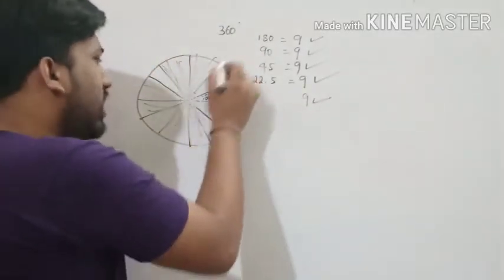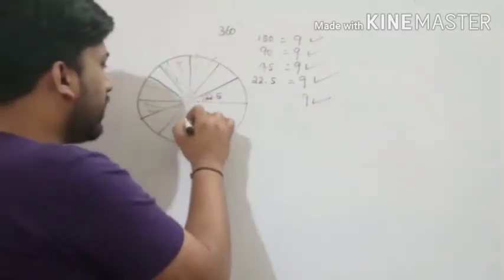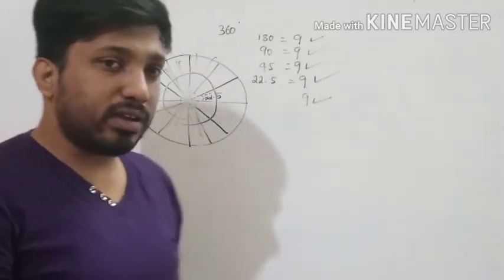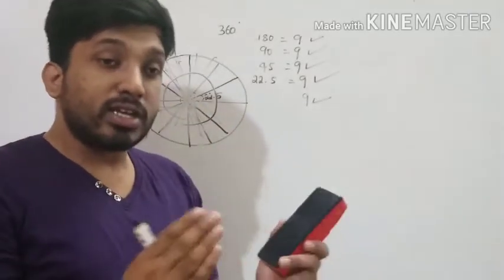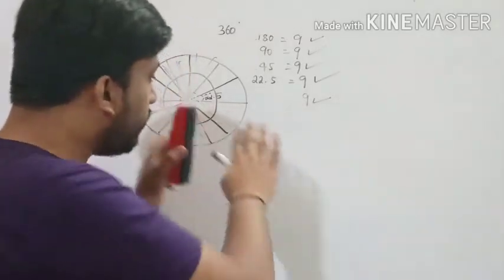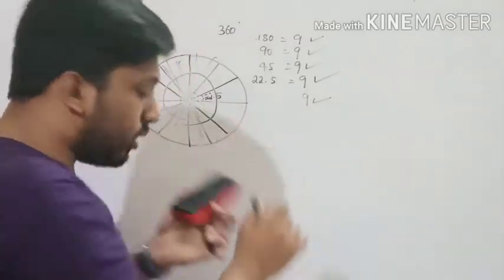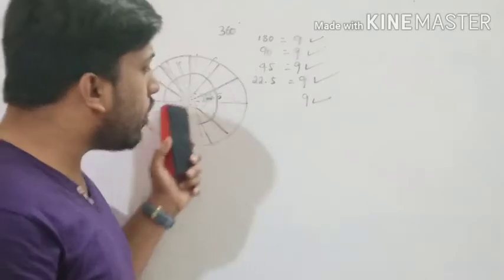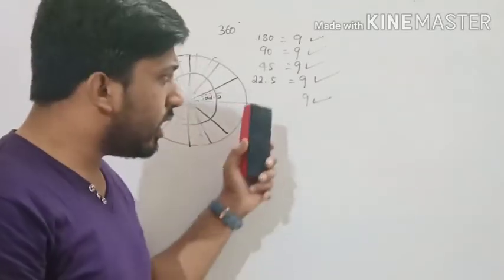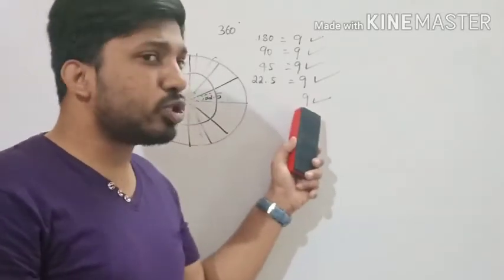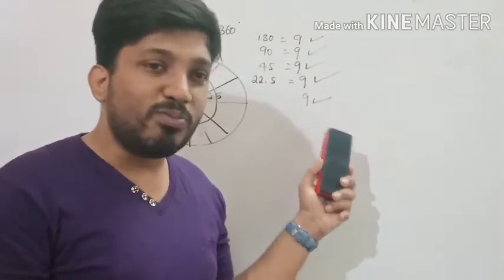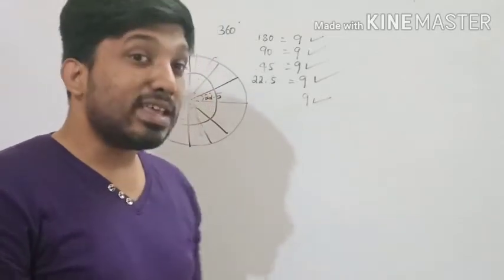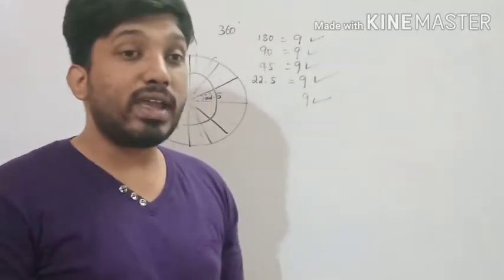When we find the circle tending to singularity — when we try to reduce it towards a point — all the angles we divide correspond to the pattern of 9. How beautiful is this! This is the third reason why the circle is 360 degrees.